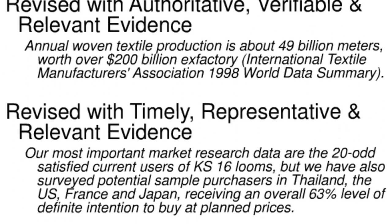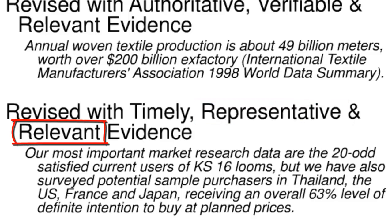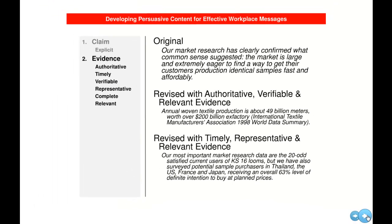If the writer added the second piece of evidence shown here, the audience should be even more willing to accept the claim because now they've seen timely, representative, and relevant evidence that the market wants the business's product. The evidence is timely because it comes from current users, representative because it focuses on potential customers on four continents, and relevant because it deals specifically with sales of the business's product. To persuade an unwilling audience, a professional writer must provide effective evidence — authoritative, timely, verifiable, representative, complete, and relevant.